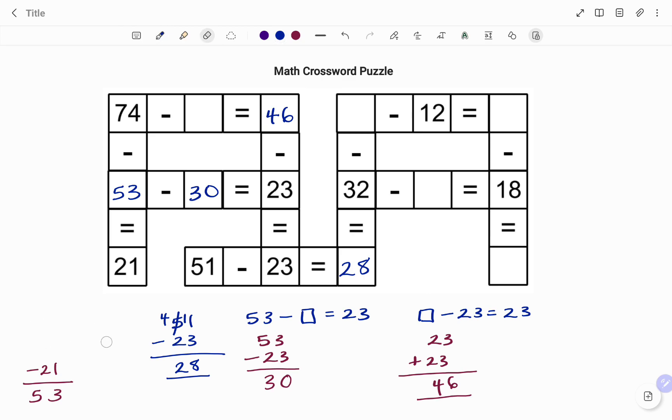Then I go to the next column. I'm going to work with the row at the top, which says 74 take away something. That's the box equals 46. To find the content of my box, I have 74 minus 46. Regrouping. I've taken out 1 from 7, that's 6.